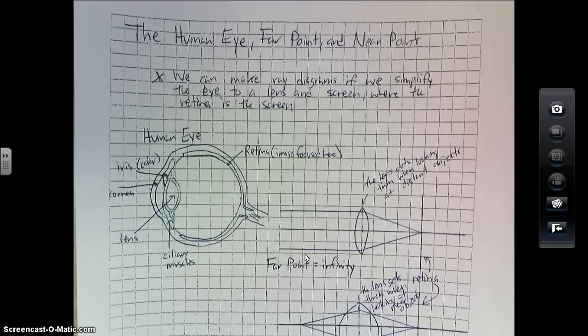All right, this video is about how the human eye will focus an image and a couple vocab words for IB: far point and near point.